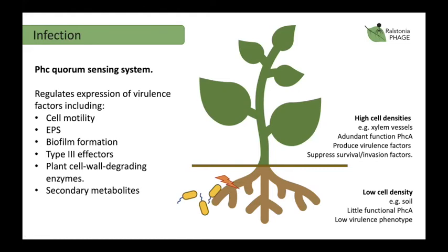These virulence factors are predominantly regulated by the phc quorum sensing system. When cells are at low density in the soil, low levels of quorum sensing molecules produce a low-virulence phenotype. When bacteria are present in the xylem vessels at high cell densities, the abundant accumulation of quorum sensing molecules regulates virulence factor production and suppresses the soil-survival and invasion factors, switching the bacteria to a more virulent phenotype.